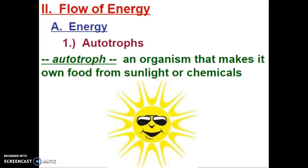In our last section, we talked a lot about the biotic factors in an ecosystem — the living parts. We'll be focusing in on that when we talk about the flow of energy through an ecosystem. All organisms require energy to perform life's functions; that's one of our characteristics of life. Autotrophs are organisms that make their own food from either sunlight through photosynthesis, or chemicals through a process called chemosynthesis. Autotrophs can also be called producers because they produce their own energy. Autotrophs in an ecosystem would be the plants and green algae.